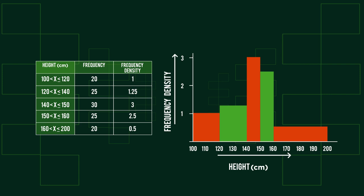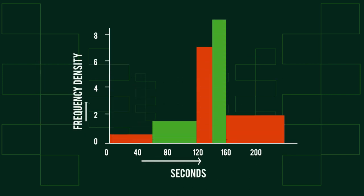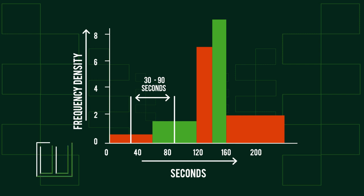As we can see, now the group 150 to 160 is taller than the 120 to 140, showing a higher frequency for the same class width. It's also important to be able to interpret the data in a given histogram. Take a look at this one here. Estimate the number of people who took between 30 and 90 seconds to complete the test. If you want to have a go first, pause the video now.